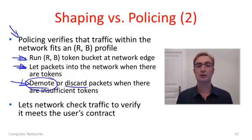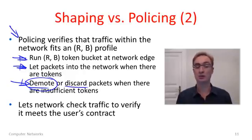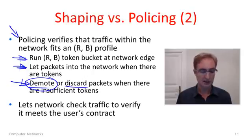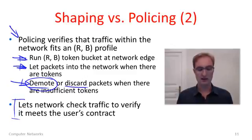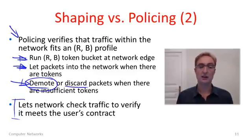Anything in excess of the RB token bucket profile might be demoted by being marked as purely best effort. The network will let it through if there happens to be bandwidth available; otherwise it will get dropped — so it won't be treated as well. It will be demoted.